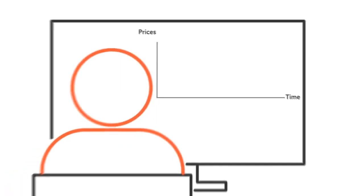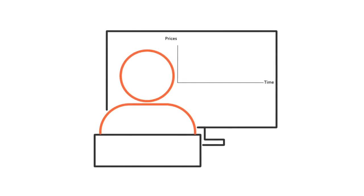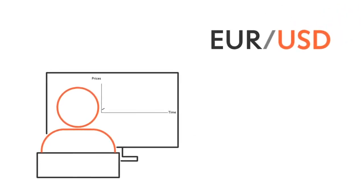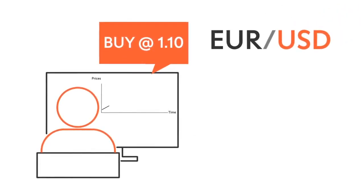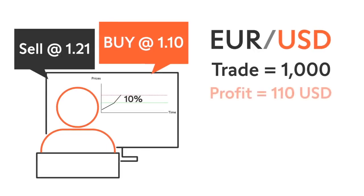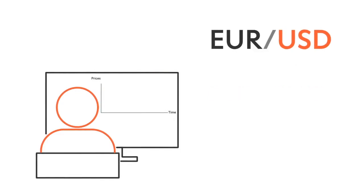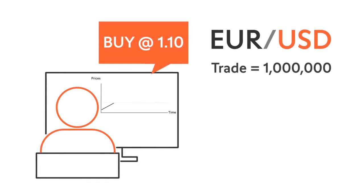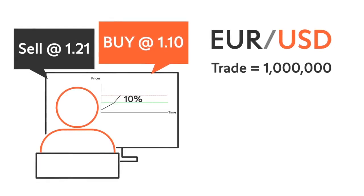Since the profit or loss is so small for each currency unit traded, many trades are very large. For example, if you buy 1,000 euro by selling US dollars and sell them again once the euro has risen 10%, you will make 110 US dollars of profit. Similarly, if you buy 1,000,000 euros against US dollars on a 10% rise, you would make 110,000 US dollars profit.